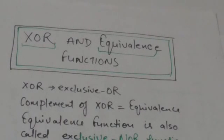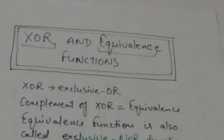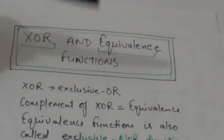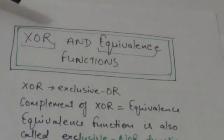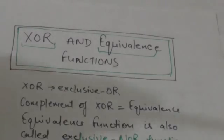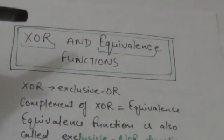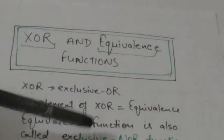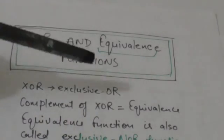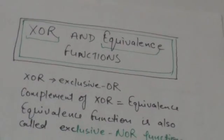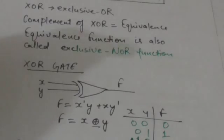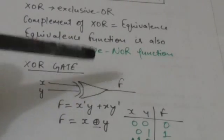Hello friends, welcome back. In this tutorial we will study about XOR and equivalence functions. XOR is an abbreviation of exclusive OR. These two functions, XOR and equivalence, are complements of each other. Equivalence function, since it is the complement of XOR function, is also called the exclusive NOR function.